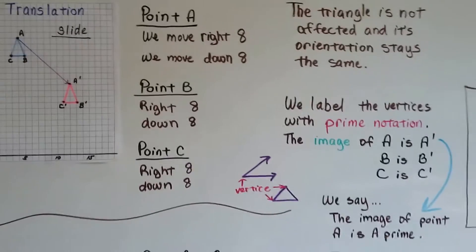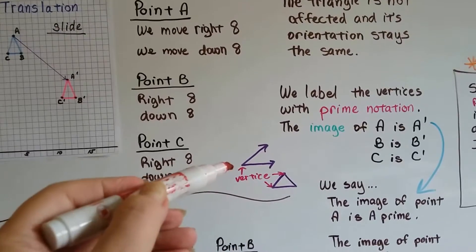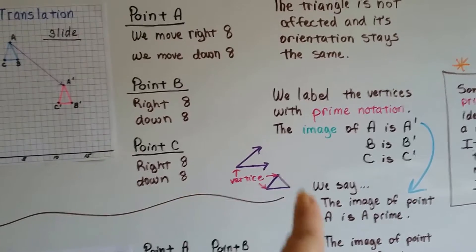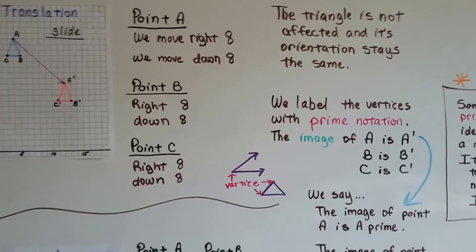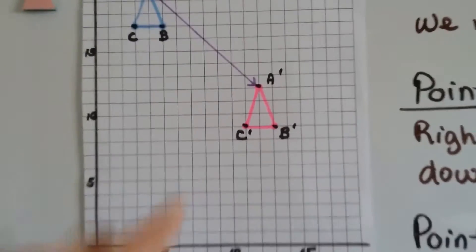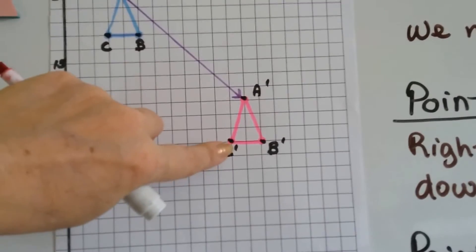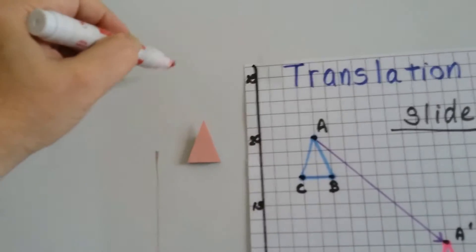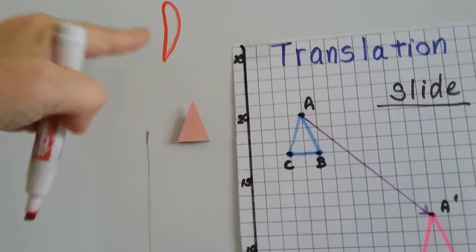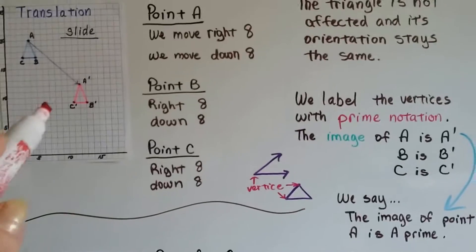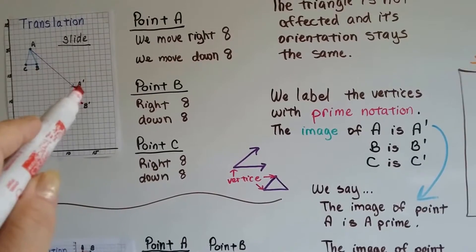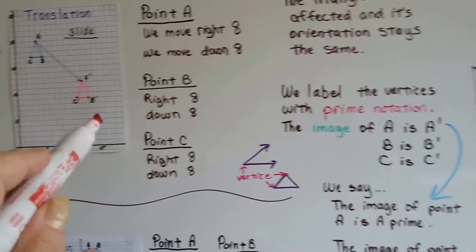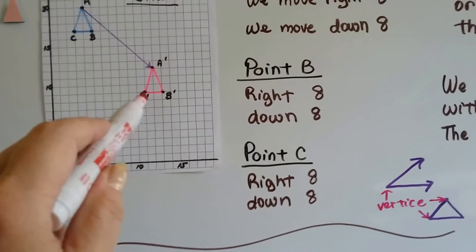So we label these vertices. Remember, a vertice is like the point right here or right here or right here or even over here. They're the pointed tips. So we label the vertices with prime notation. So if you look on here, you see these little marks. So that's not a 1, that's a little tick mark. If I were to look at it under a microscope, it would look more like that. Like an upside-down teardrop. So that's a tick mark, and it says the image of A is A prime. So the image of A is A prime, that's the A with the little tick mark. And B is B prime, and C is C prime with that little tick mark.